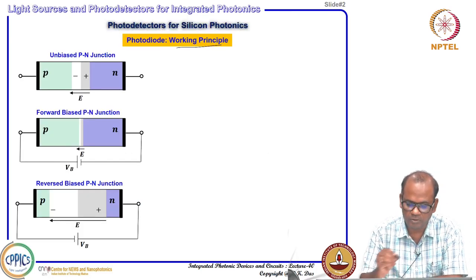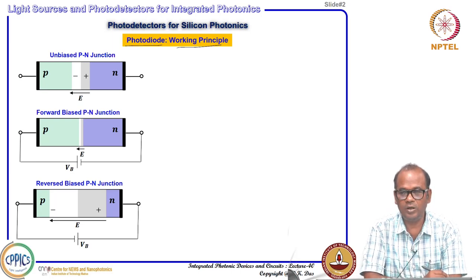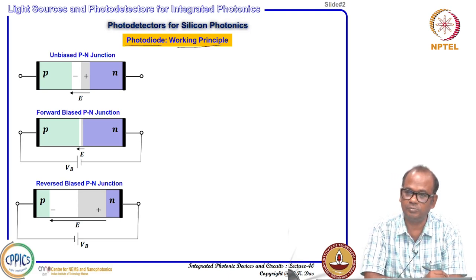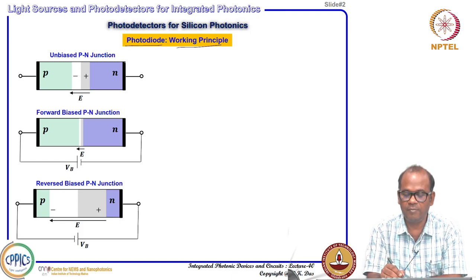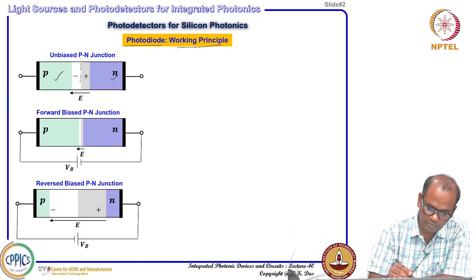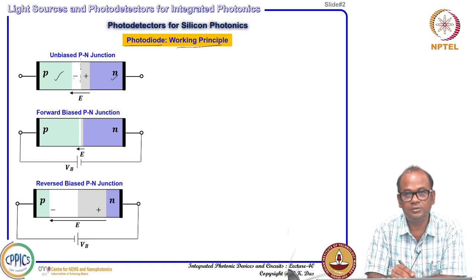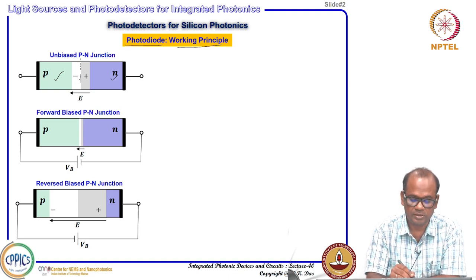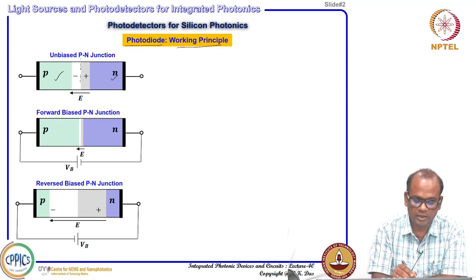Let me start with the working principle. As the name suggests, a photodiode is a diode - basically a semiconductor P-N junction diode. When a P-N junction is fabricated, one side is P-type doping and another side is N-type doping. At the metallurgical junction, majority carriers from the N-side like electrons move into the P-side and combine with holes, creating positive immobile charges in the N-side region. Vice versa, negative immobile charges form in the P-side, creating a space charge region.